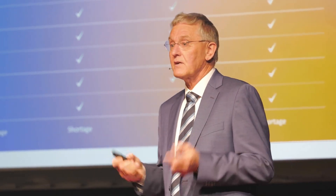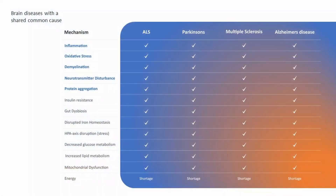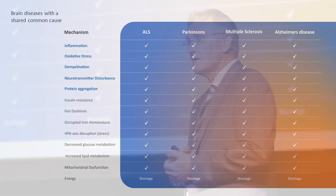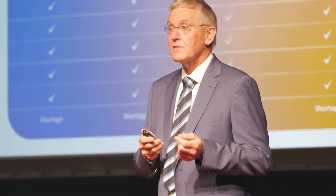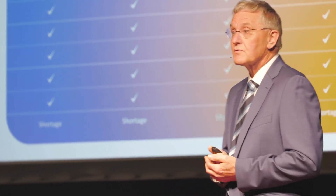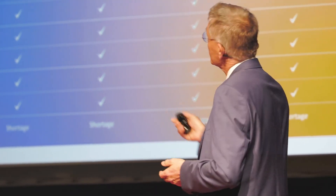Independent of which brain disease you look at, you see the whole list: inflammation, oxidative stress, demyelination, neurotransmitter disturbances, protein aggregation, and the whole list down to mitochondrial dysfunction and shortage of energy. When a doctor gives you medicine, they will try to treat one of these marked symptoms — they treat some symptoms, but they don't treat the disease.